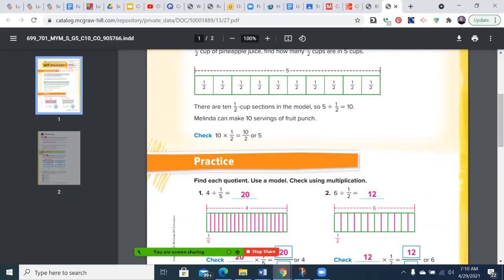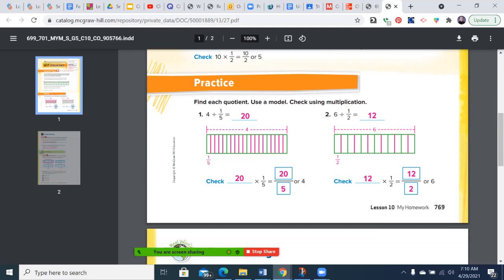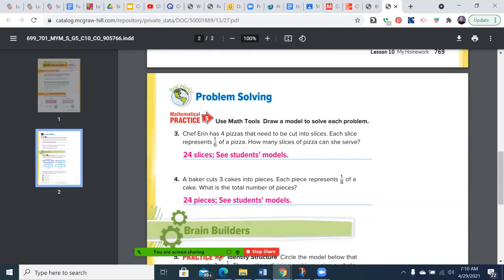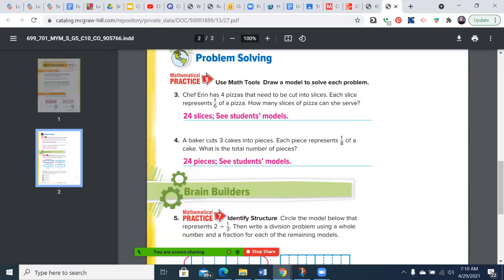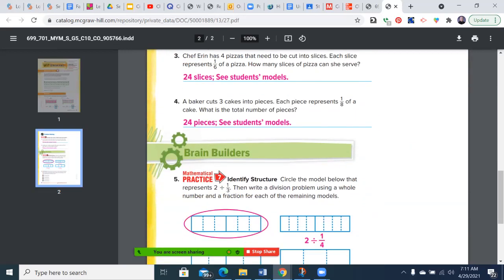Melinda can make 10 servings. So 4 divided by 1/5, you took your four whole ones, divided it by 1/5, which is divided by 5. In each section there's 20 total. Six split into halves was 12, 4 divided into 6 sections was 24, 3 into 8 sections was 24.